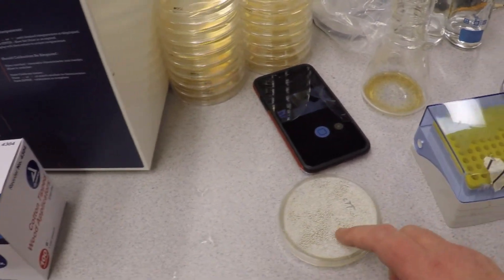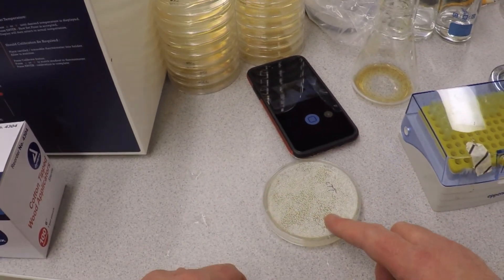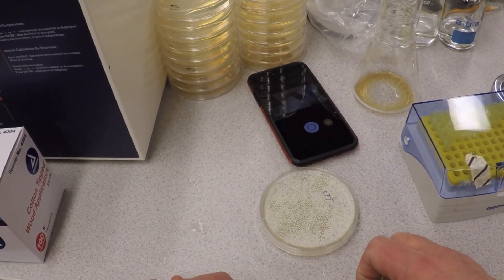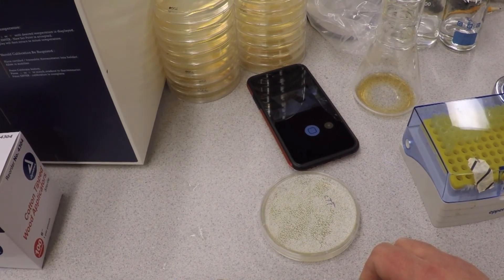Now once this dries or cools, which is pretty quick, we will then sit there and put this at 30 degrees, and hopefully you'll see Myxos that are kanamycin-resistant in about seven days.